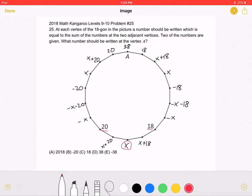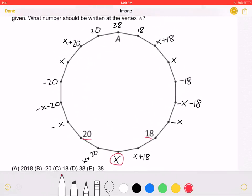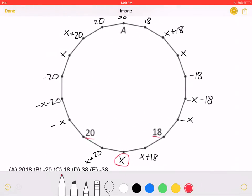As stated in the problem, each number is equal to the sum of the numbers at the two adjacent vertices. This means that if this vertex is 20 and this one is X, the sum of those two would be X + 20, which is this vertex.